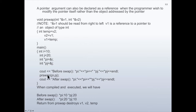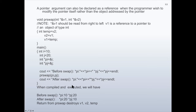Then there is a call to the function ptr_swap with parameters pi and pj, which are these pointers. After the call, there is an output statement printing 'After swap': the content of the item pointed by pi, then the content of the item pointed by pj, followed by end line.